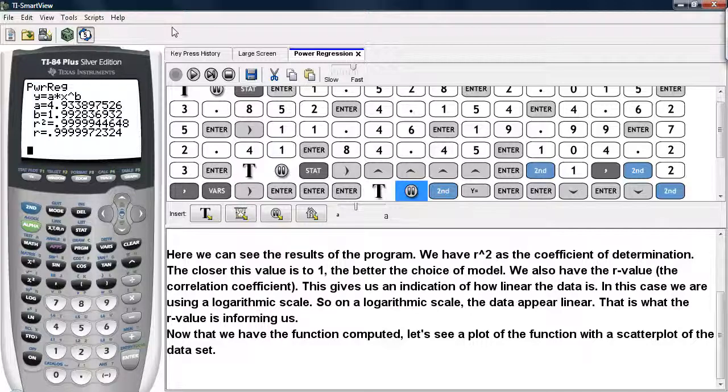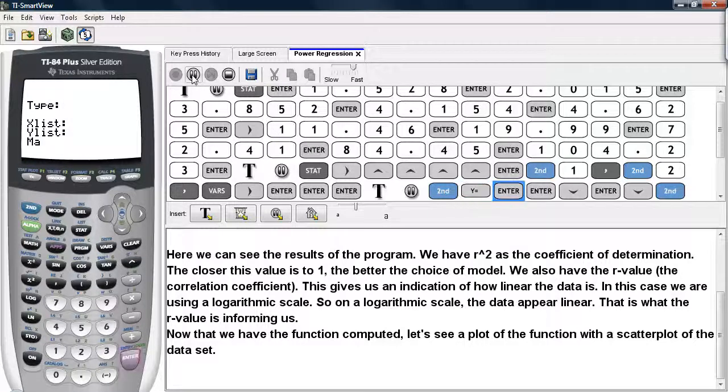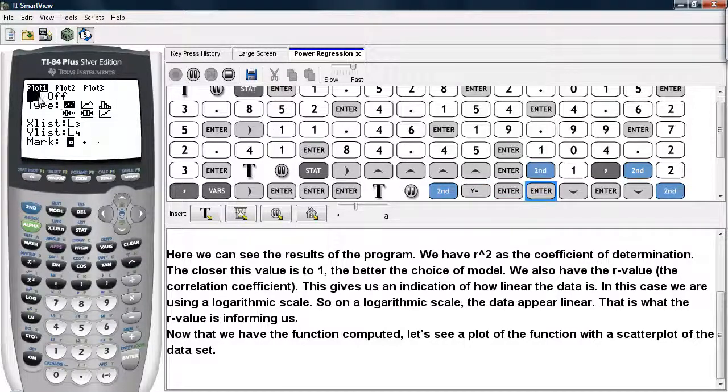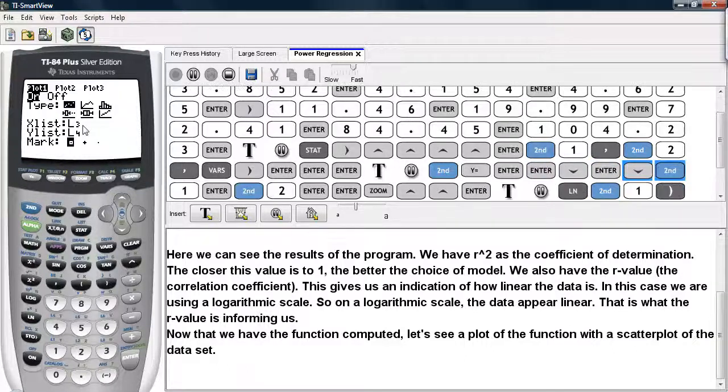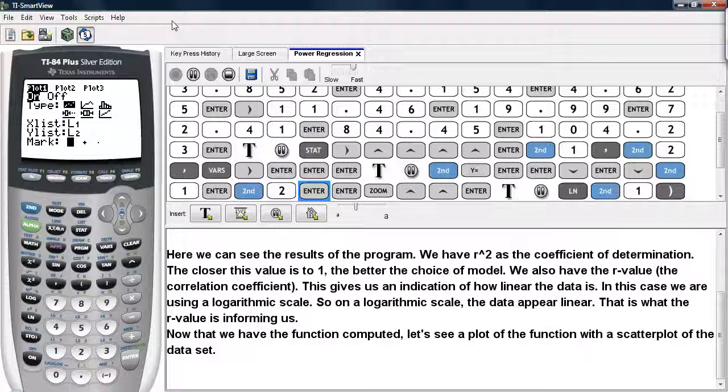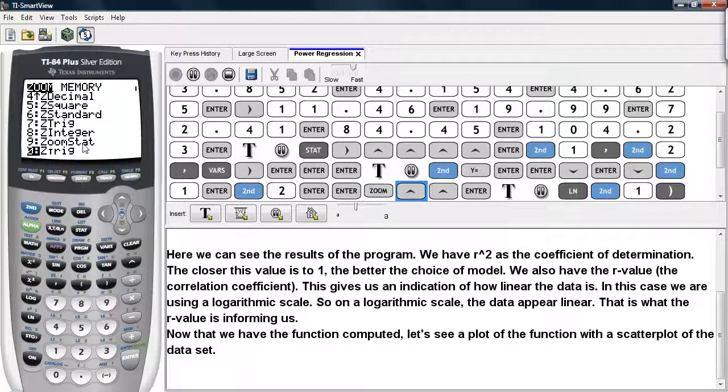Now let's see a plot of the function with the scatter plot of the data set. So we'll go under second and Y equals. We'll turn the plots on. We'll select scatter plot and we'll go ahead and select L1 as the X list and we'll select L2 as the Y list. Our mark will be the box so we can easily see the data values.